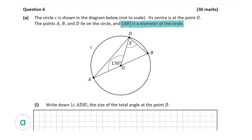Let's have a look at A part 1 now, which wants us to write down the angle ADB — the size of the total angle at point D. Be careful here as some of the angle has been marked with an x, however we're tasked to find the size of the total angle, not just the size of angle x.